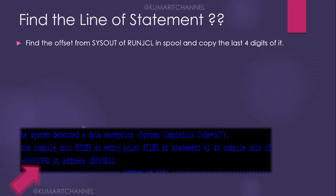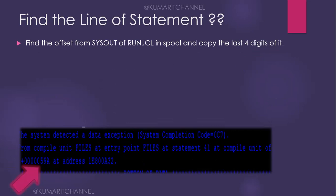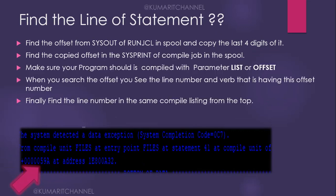How do we find the line of statement? First, find the offset from the SYSOUT of the run JCL in the spool, and copy the last four digits of it. Then follow the steps to locate the code. Let me connect to the mainframe and demonstrate this, starting with Scenario 1 — how to see the SOC 7 abend.